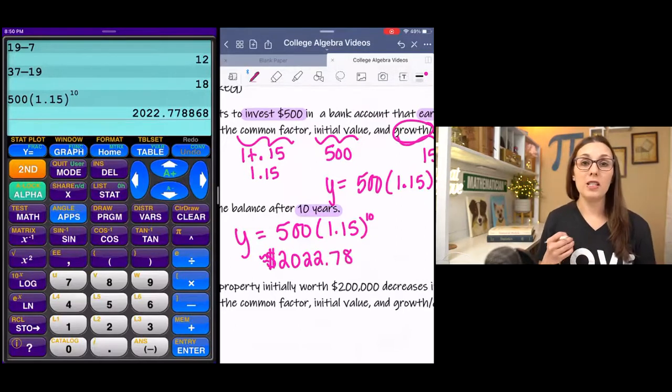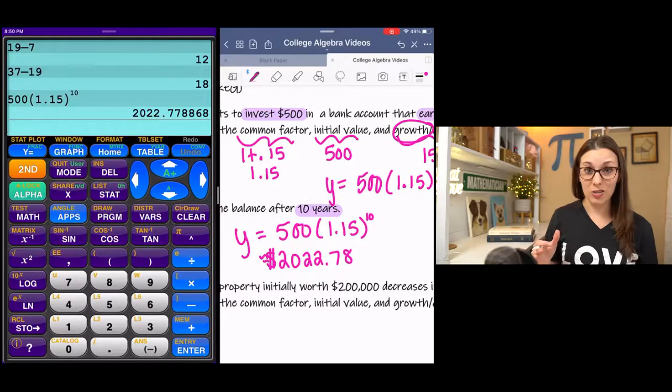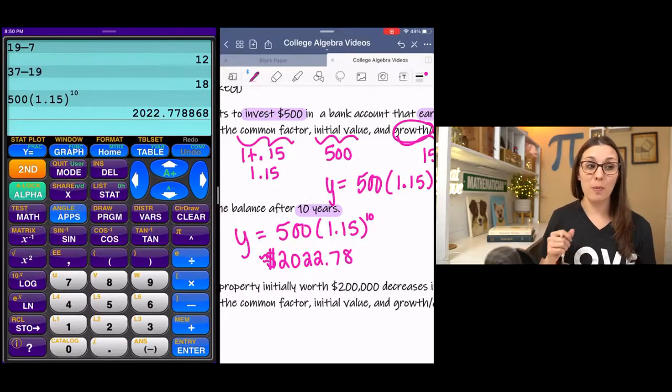And we get about $2,022.78. So if you invest $500 into a bank account and it is accruing interest, you left it there for 10 years. Then after 10 years, you would have about $2,000. That's not too shabby.